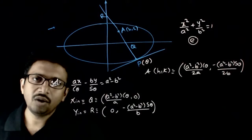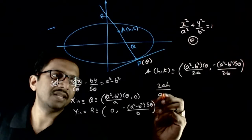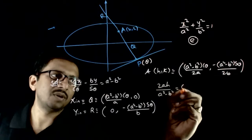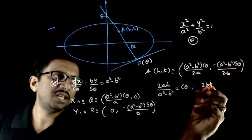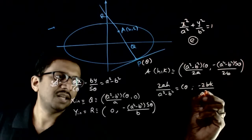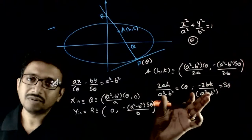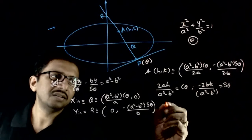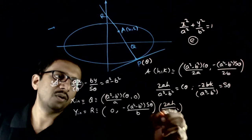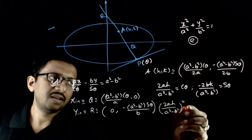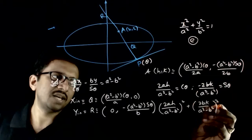You are asked to find the locus. From the midpoint expressions: 2ah/(a² - b²) = cosθ and -2bk/(a² - b²) = sinθ. Now if you square both and add them, theta will be eliminated. So (2ah/(a² - b²))² + (2bk/(a² - b²))² = 1.